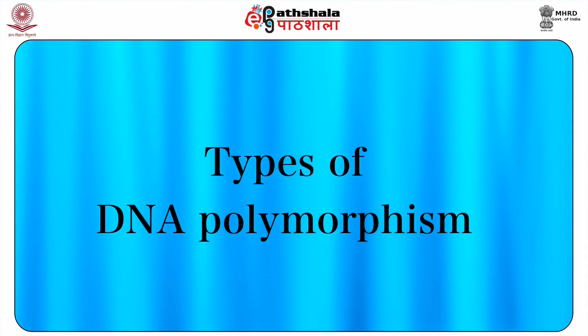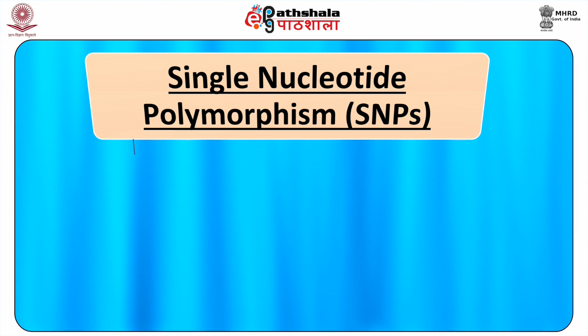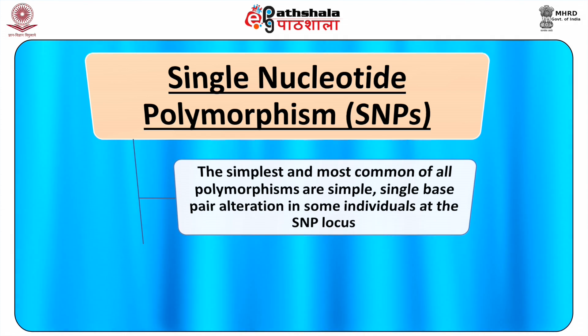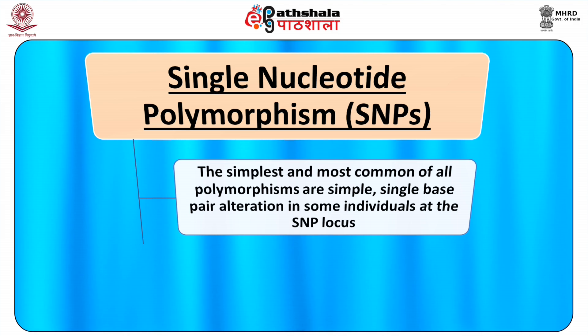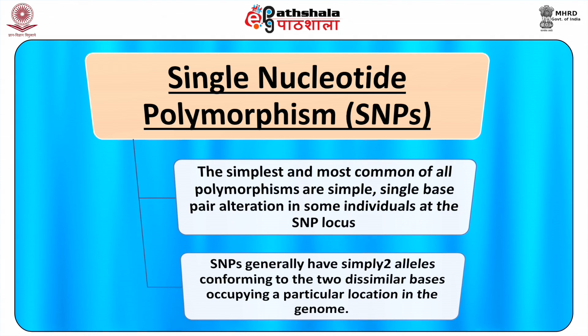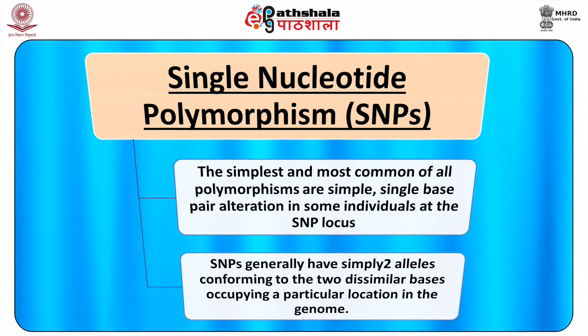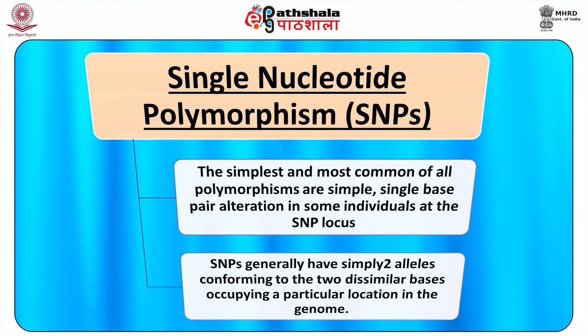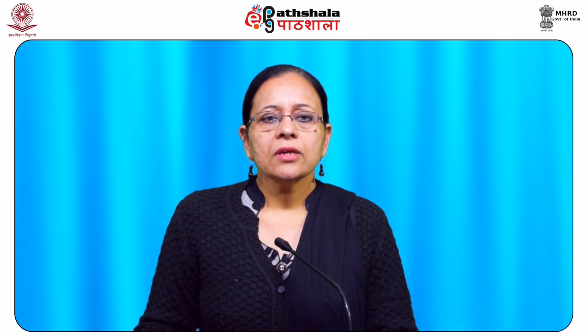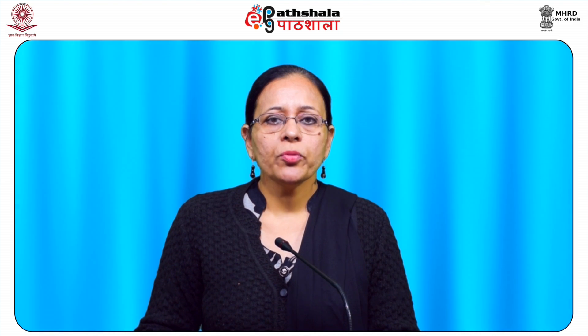Types of DNA polymorphism: Single nucleotide polymorphisms or SNPs. The simplest and most common of all polymorphisms are simple single base pair alterations in some individuals at the SNP locus. SNPs generally have simply two alleles, conforming to the two dissimilar bases occupying a particular location in the genome. The entire number of variant positions among all humans is far greater and is estimated to be more than 100,000. Many millions of SNPs have been recognized and catalogued in populations worldwide.